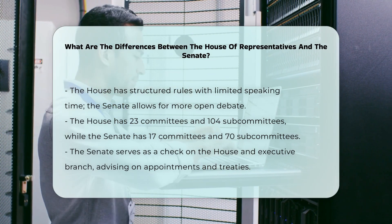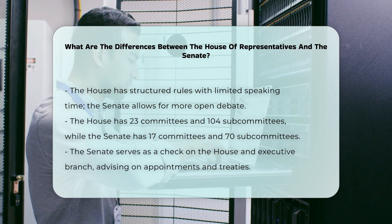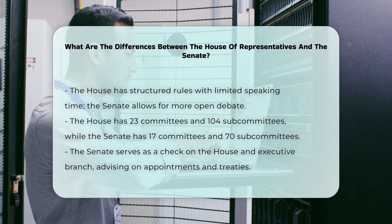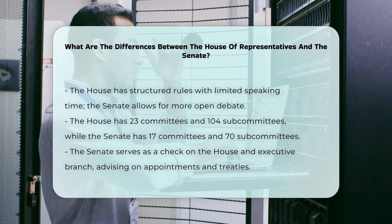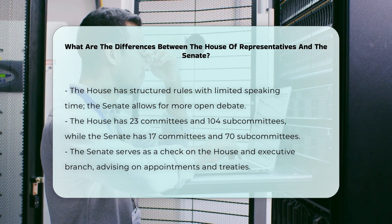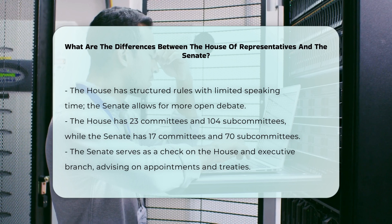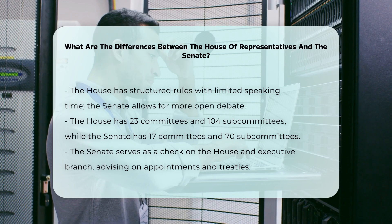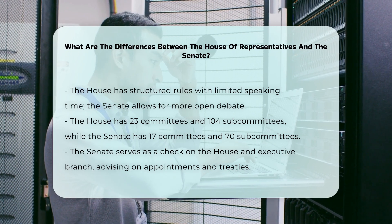The Senate acts as a check on the House and the executive branch, with the power to advise and consent on presidential appointments and treaties. This role is designed to prevent any single branch from abusing its power.